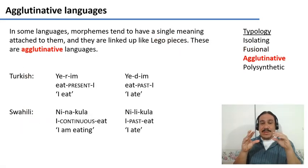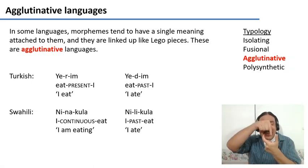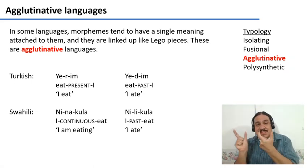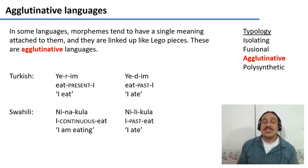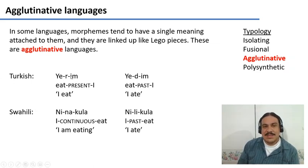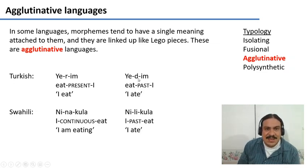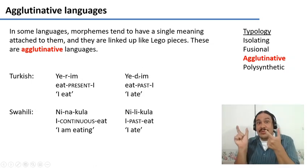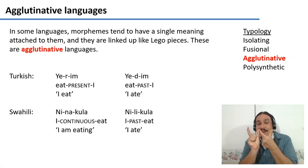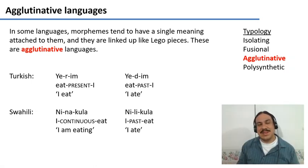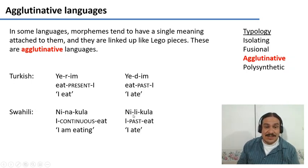In agglutinative languages, meanings are spread apart so each morpheme tends to have one bit of meaning, but the morphemes still stick together like Lego pieces. Turkish and Swahili are examples. In Turkish, 'yerim' means I eat and 'yedim' means I ate. You can see there is a piece meaning present tense, a piece meaning past tense, and a separate piece meaning 'I' in both. The tense and the person are separated into their own morphemes. Swahili works the same way — 'nilikula' has one morpheme for past tense and one for person.